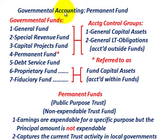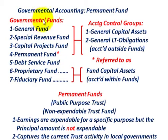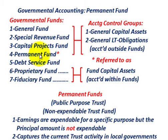What we're going to be going over here is governmental accounting for what they refer to as the permanent fund. When we talk about governmental accounting, we have various governmental funds like the general fund, special revenues fund, capital projects fund, and then the permanent fund. We're going to look at the basics of what we mean by the permanent fund and some basic journal entries to see how it really operates.